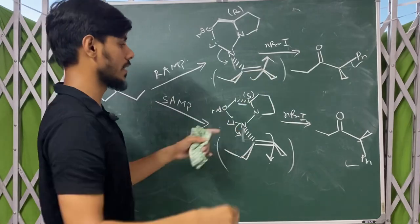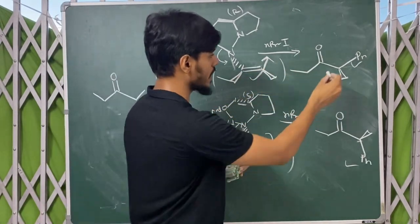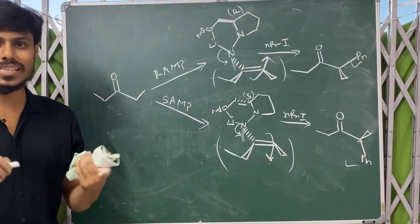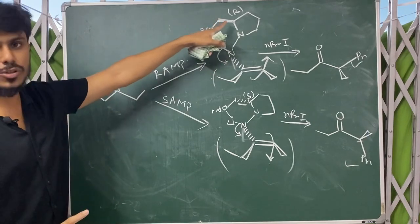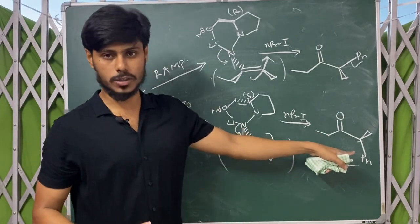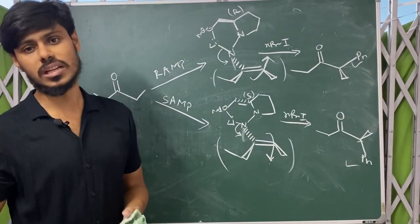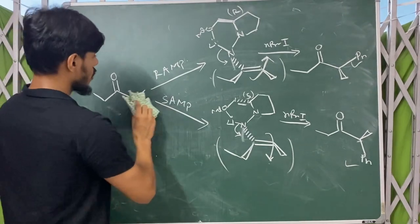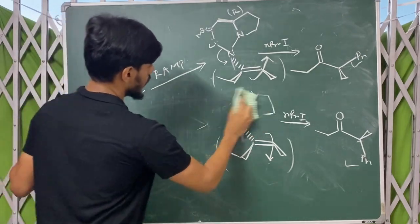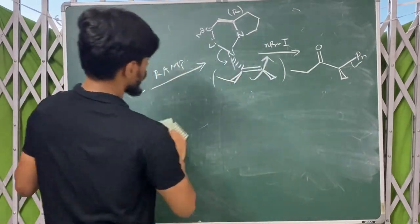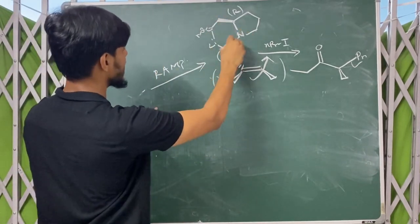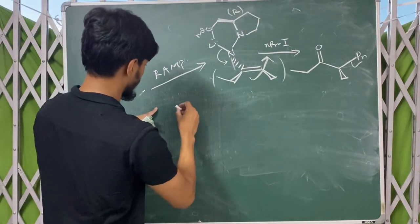These two products have different stereochemistry: in one case the propyl group comes from the top, and in another case from the bottom. When R-AMP is used, it comes from the top; when S-AMP is used, it comes from the bottom. Now we will see how this stereoselectivity arises. First we will look at the case of R-AMP, and for that we have to draw the 6-membered chelated ring first.